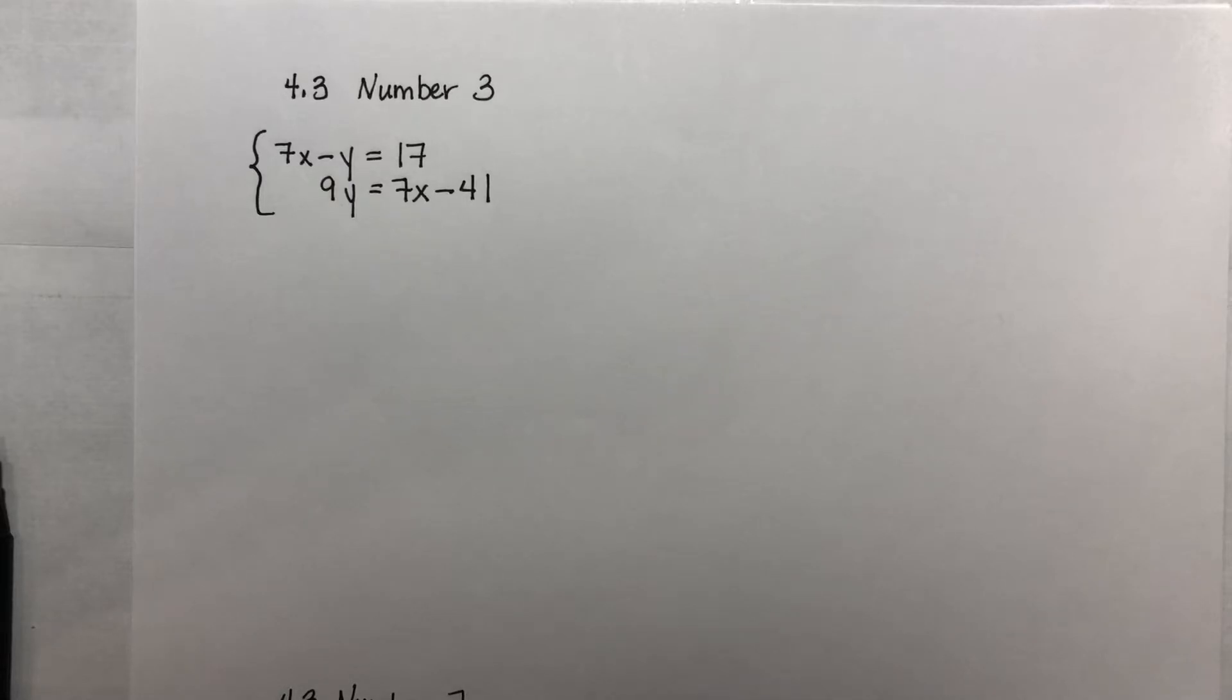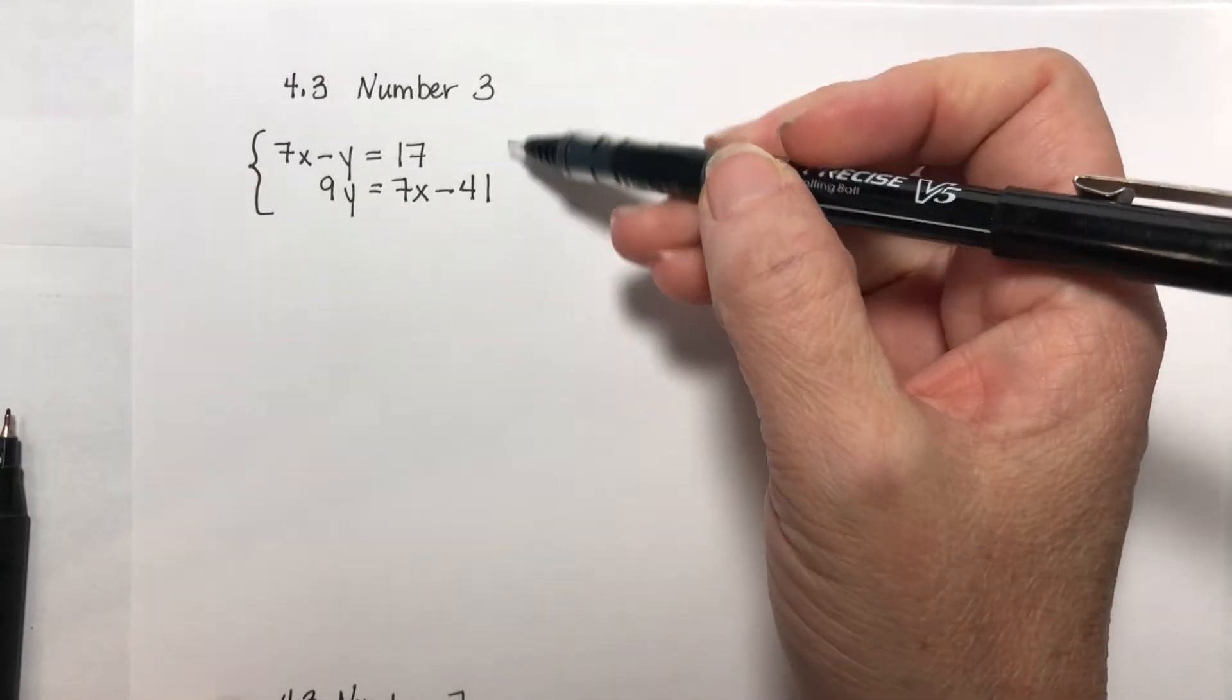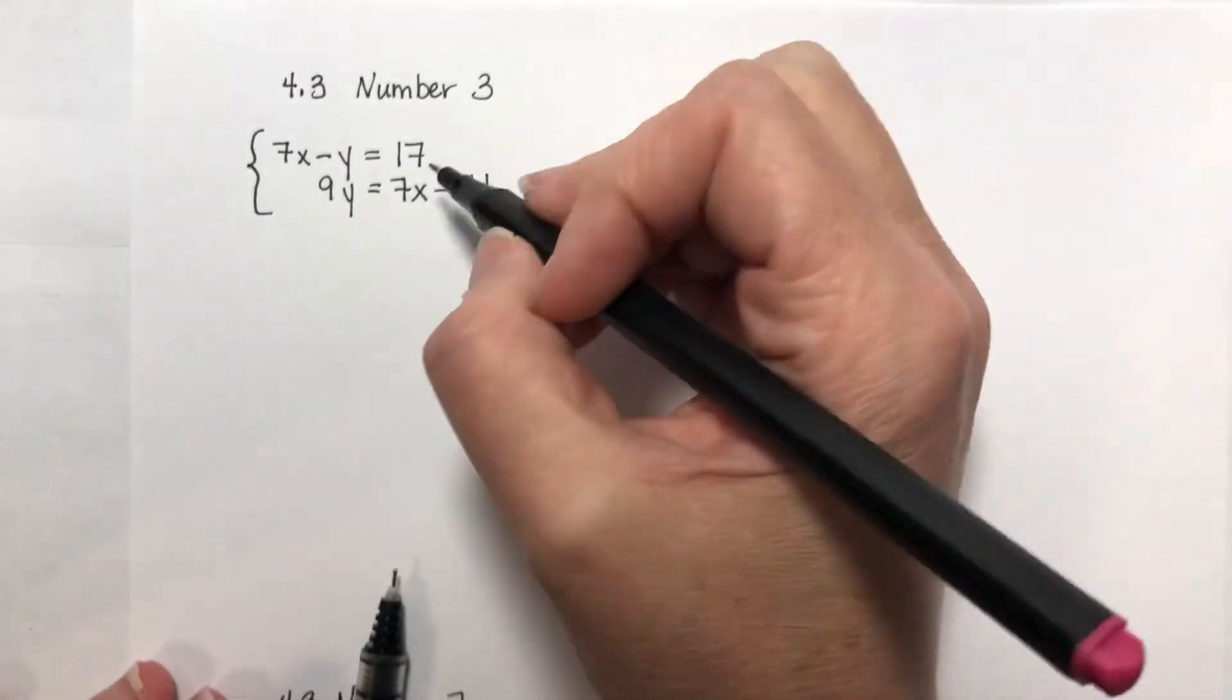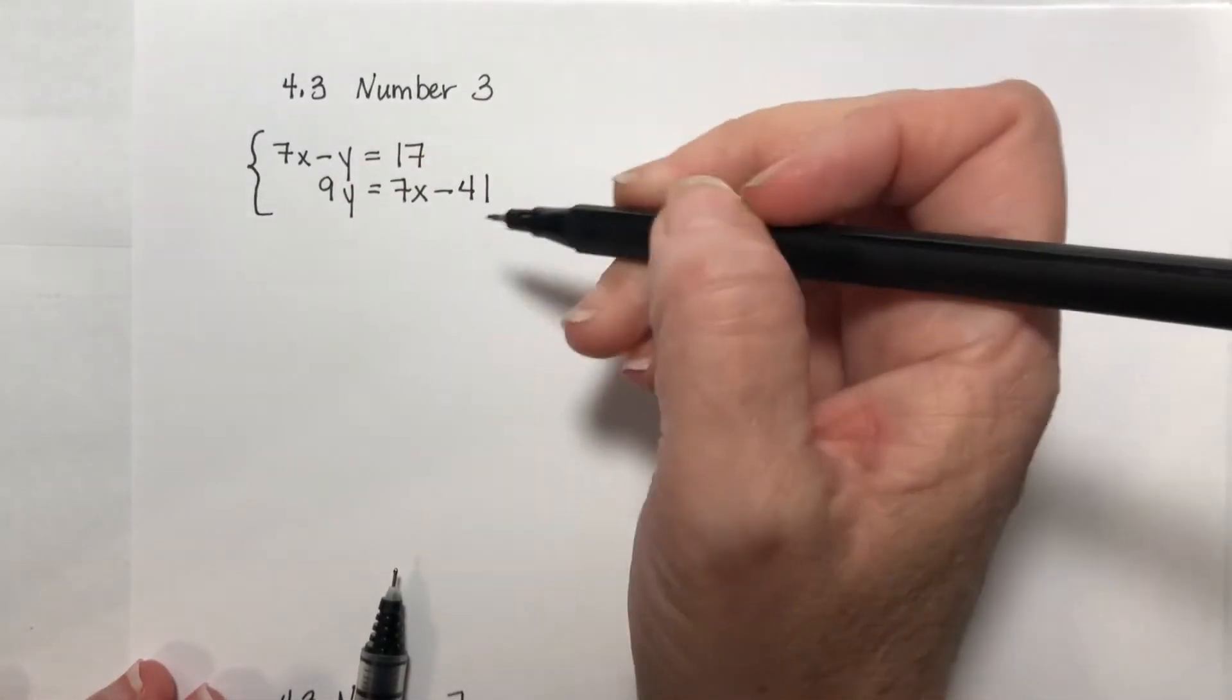This is question number 3 from the 4.3 homework. If I'm going to solve this using elimination, the first thing I really need is my x and my y on the same side for both equations.